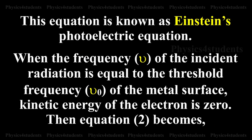This equation is known as Einstein's photoelectric equation. When the frequency nu of the incident radiation is equal to the threshold frequency nu0 of the metal surface, kinetic energy of the electron is zero.